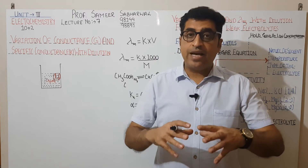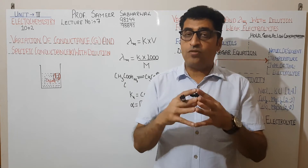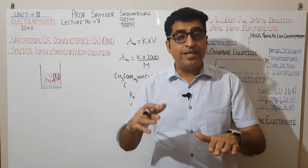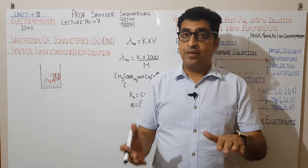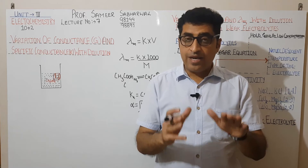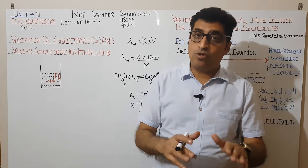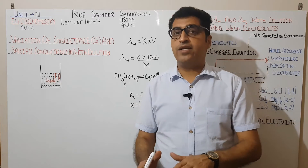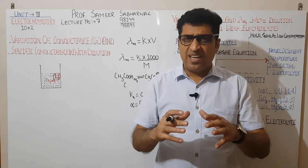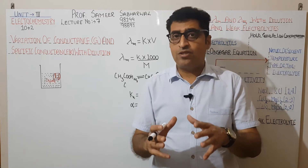Since interactions between ions decrease with dilution, ions can move more freely. So conductance of solutions increases in case of weak electrolytes as well as strong electrolytes. The increase is more prominent for weak electrolytes because the number of ions is actually increasing with dilution. For strong electrolytes, the number of ions does not increase, but their intermolecular interactions decrease, allowing freer movement, so conductance still increases with dilution.